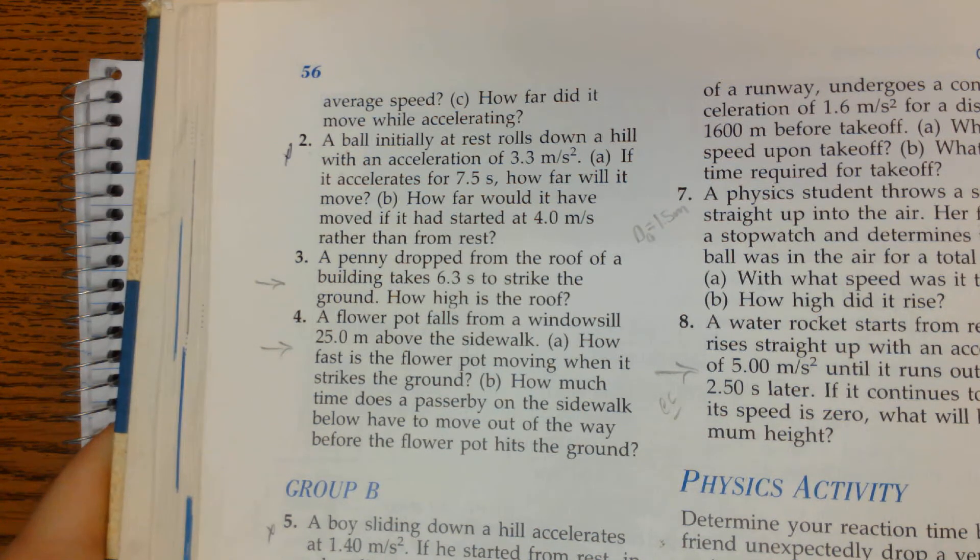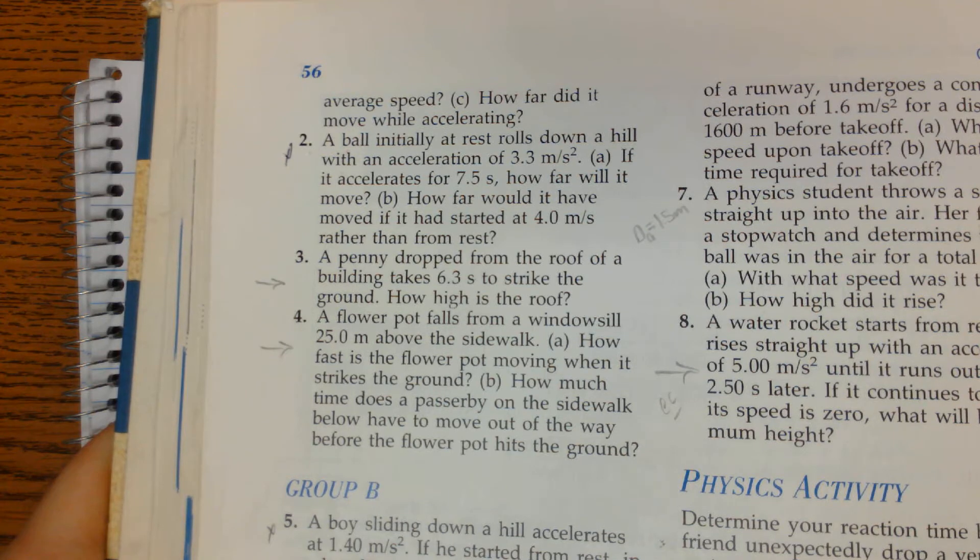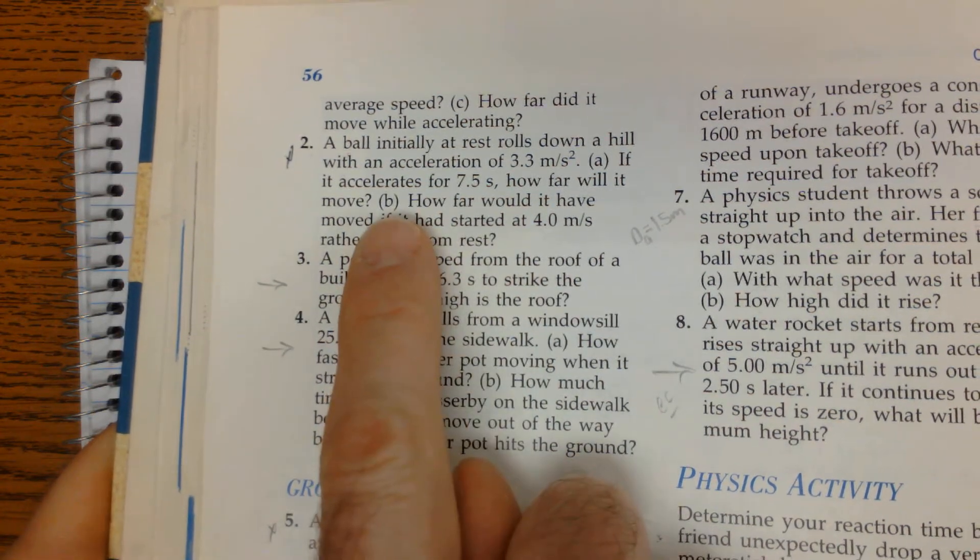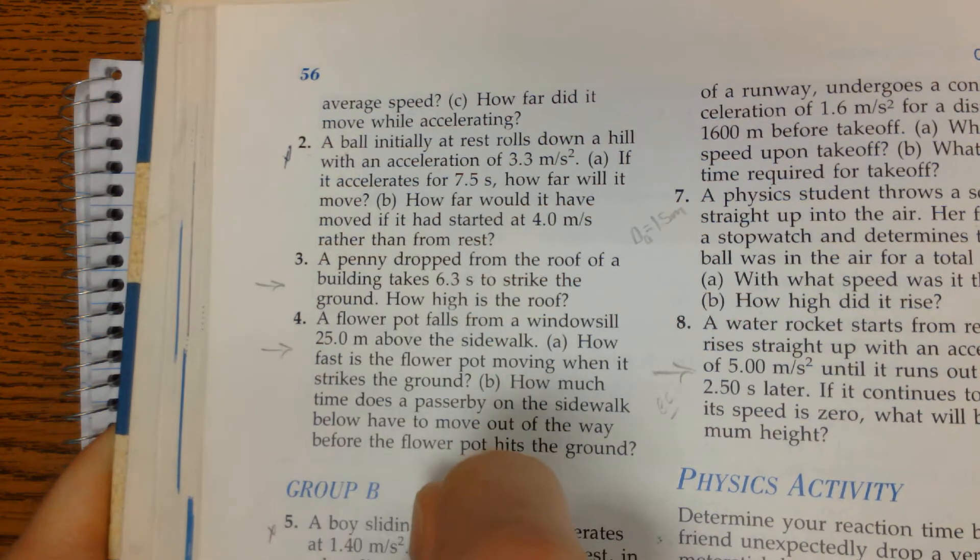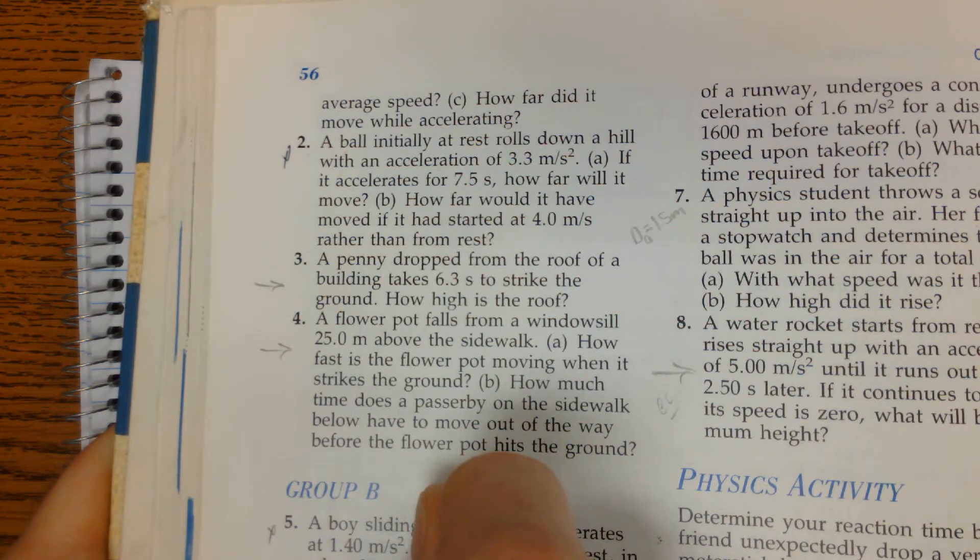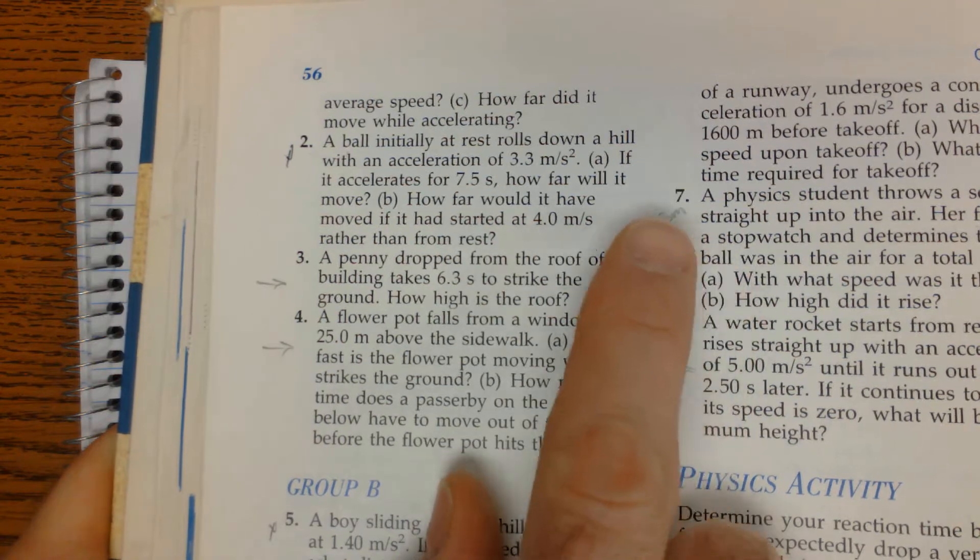All right, so we're going to do problem number two from the homework, and it says a ball initially at rest rolls down a hill with an acceleration of 3.3 meters per second squared. And then it has two parts to it.